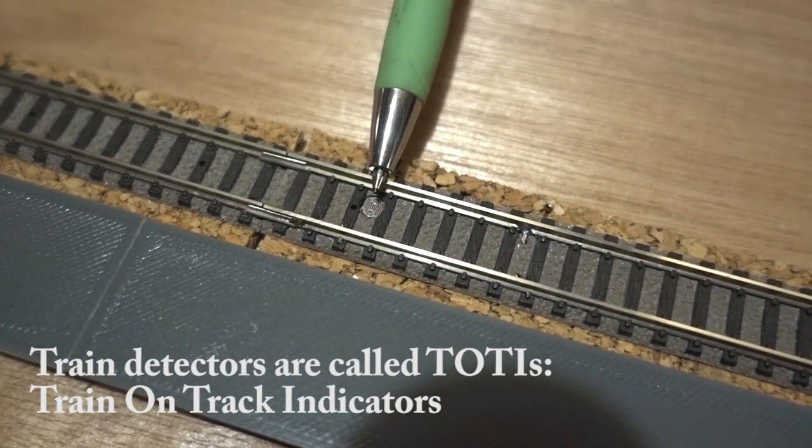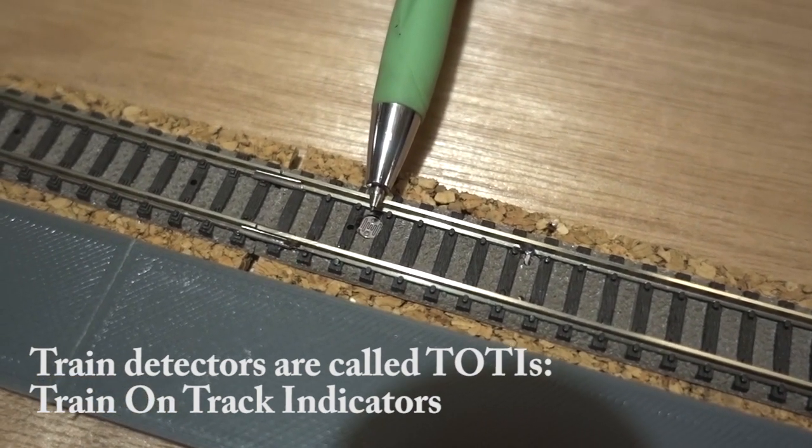Here's the spot detector. This is a light-dependent resistor set into the track.